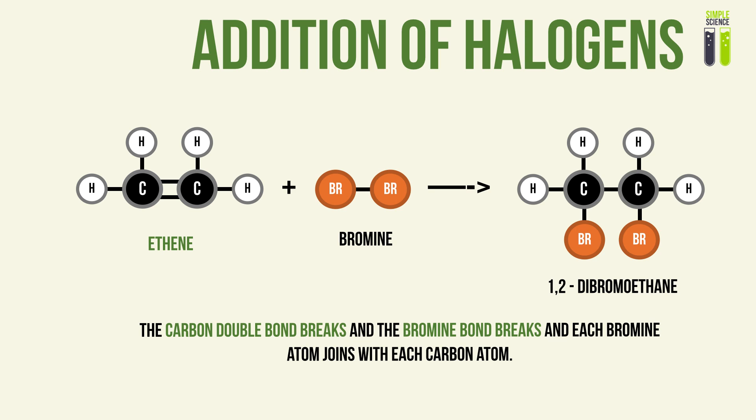The next type of addition reaction is the addition of halogens. Similarly to hydrogenation, the carbon double bond in the alkene will break, and the bond of the halogen will also break. In this case, the bromine molecule's bond breaks, and each bromine atom joins each carbon atom. This results in a halogenoalkane.